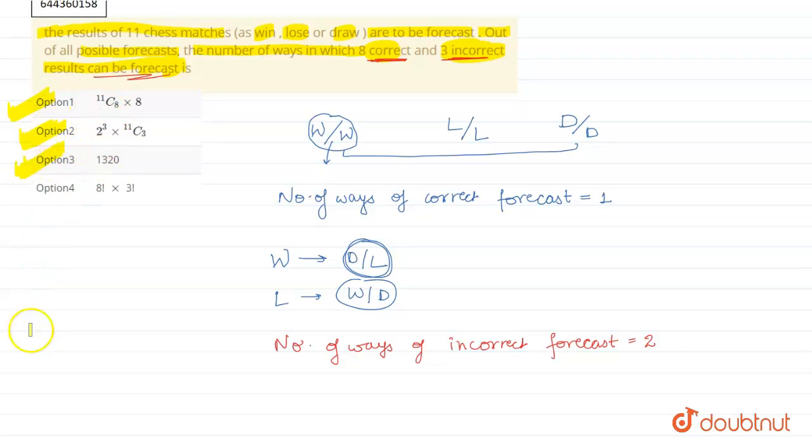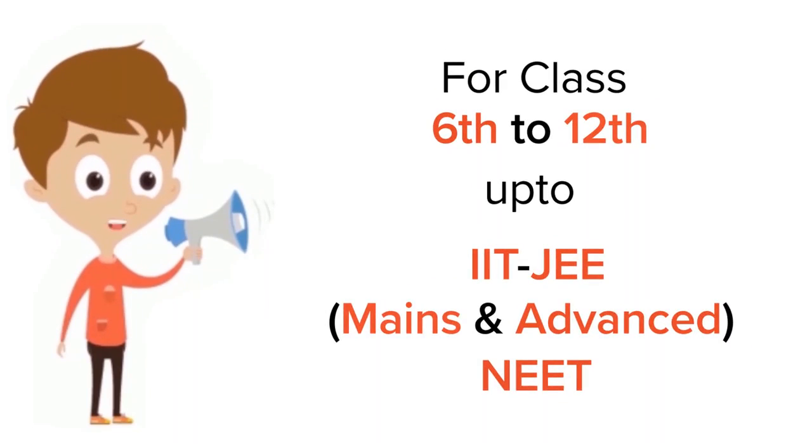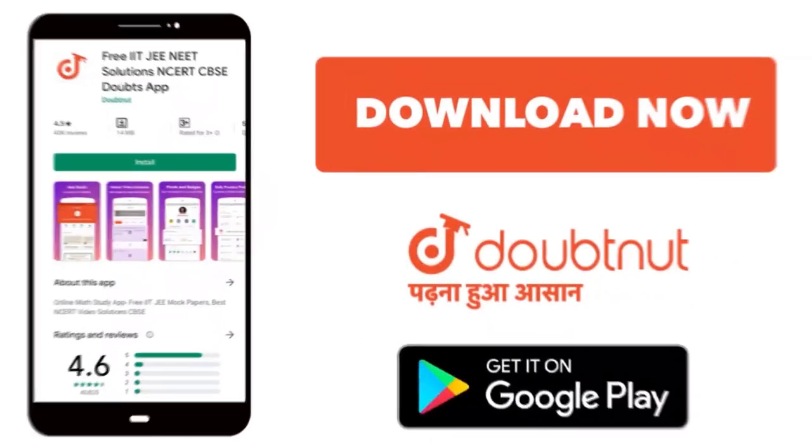So we can write the answer in three ways, which is option one, option two, and option three. So these three options are the correct options. Thank you. For class 6 to 12th, IIT and NEET level, trusted by more than 5 crore students, download Doubtnut app today.